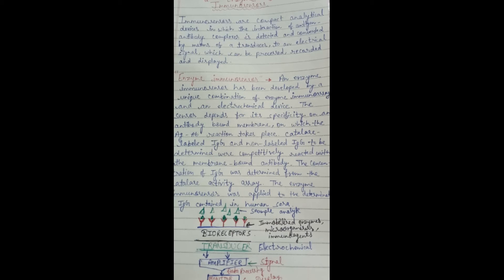Immunoglobulin G — you have studied immunology which includes IgA, IgD, IgE, and IgG. IgG is found in the largest amount in human serum.